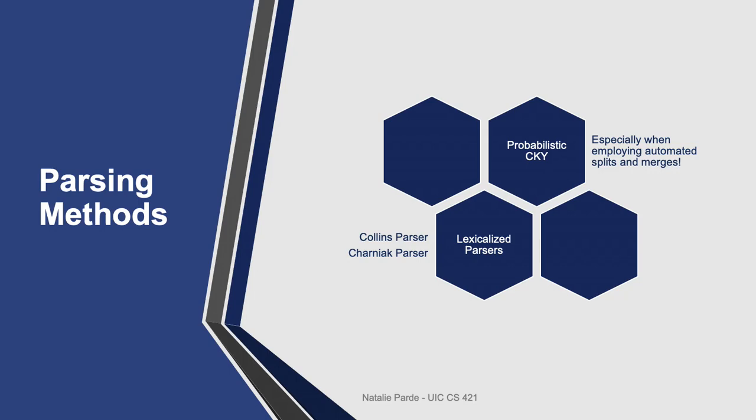So far, we've looked at probabilistic CKY as a method for statistical parsing. Probabilistic CKY is popular and works quite well, especially when incorporating extensions mentioned in the course content like automated splits and merges. However, if we don't want to modify our grammatical rules like it's necessary for CKY, another route we can take when performing statistical parsing is employing lexicalized parsers like the Collins or Charniak parsers.